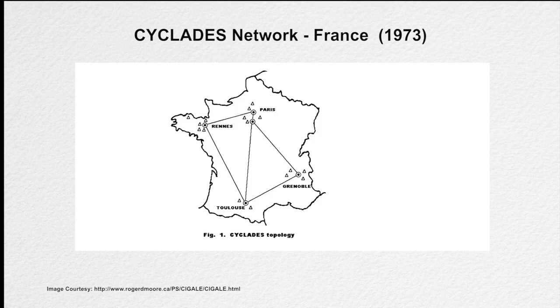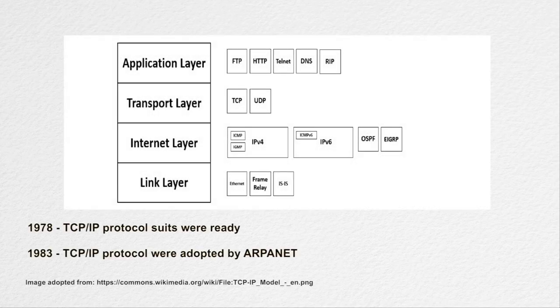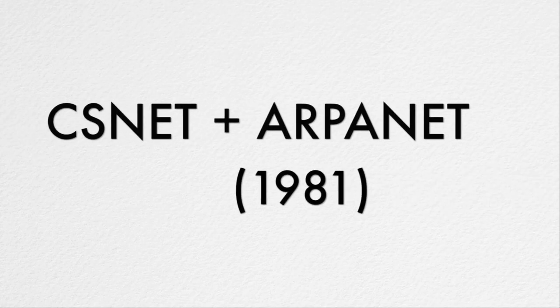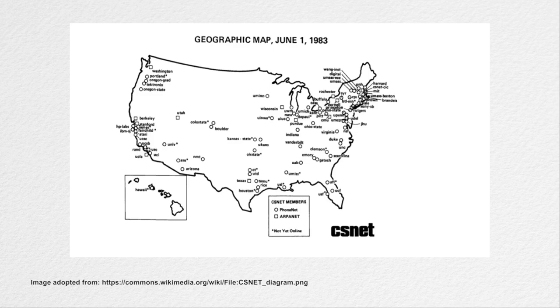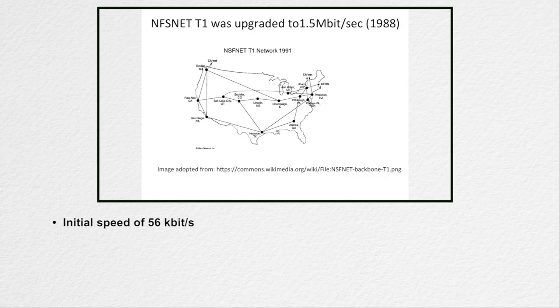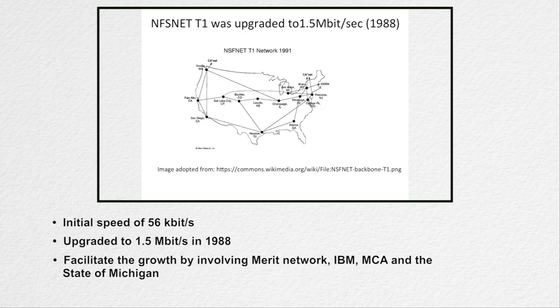France also developed a packet switching network known as Cyclades in 1973. Now there were many parallel systems working on different protocols, and scientists were looking for common standards so that networks could be interconnected. In 1978, TCP/IP protocols were ready, and by 1983 the TCP/IP protocols were adopted by ARPANET. In 1981, the integration of two large networks took place. NSF developed the Computer Science Network, known as CSNET, and it was connected to ARPANET using the TCP/IP protocol suite. NSF supported a speed of 56 kilobytes per second, and was upgraded to 1.5 megabits per second in 1988 to facilitate the growth of the network by involving Merit Network, IBM, MCI, and the State of Michigan.